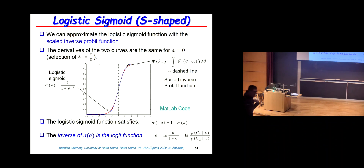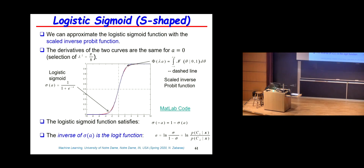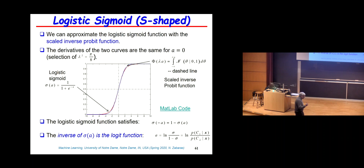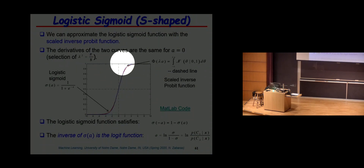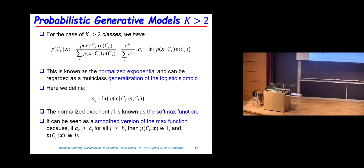A good approximation of the logistic sigmoid function is to use what is called the scaled inverse probit function, where there is a scaling factor lambda equal to the square root of pi over 8. This approximation looks very nice and is used especially when you do convolutions of the sigmoid function with a Gaussian. Later today we will reach a point where you will see such a convolution, and the only way to do it analytically would be to use this approximation.